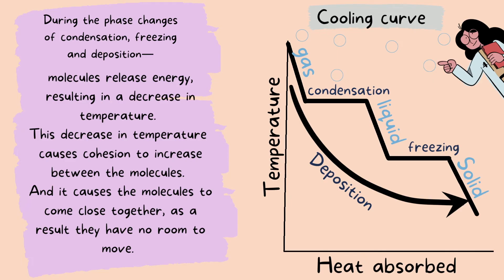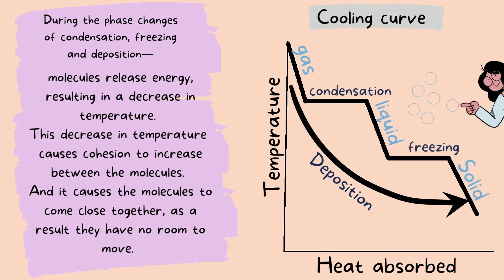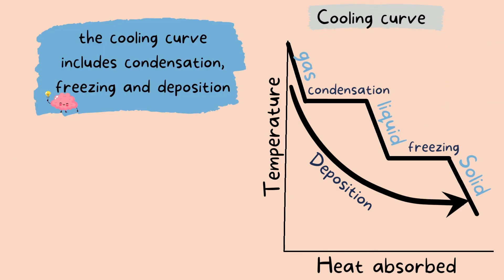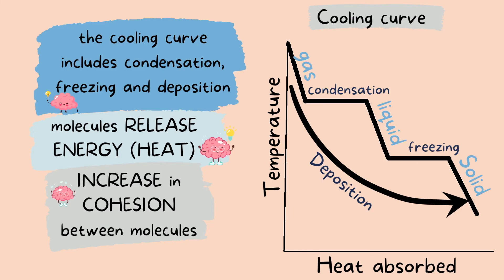Here's a look at what the molecules would look like as they cool down from gas to a liquid and liquid to a solid. And just remember these three very important points from a cooling curve. The cooling curve involves gas, liquid, and solid going downwards as they cool off. Molecules are releasing heat here and there is an increase of cohesion between molecules as they cool off.